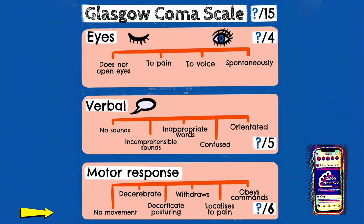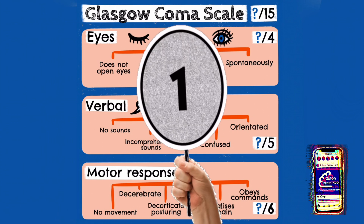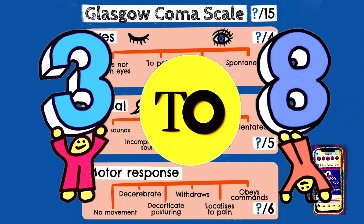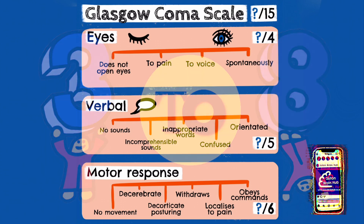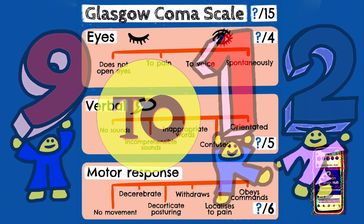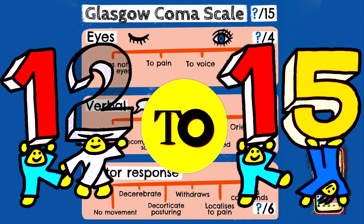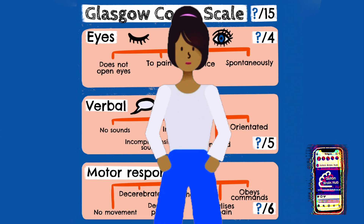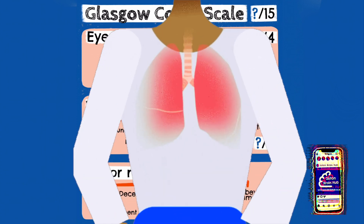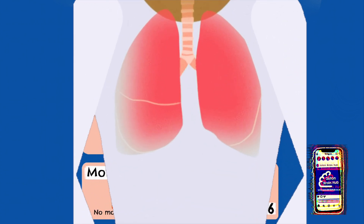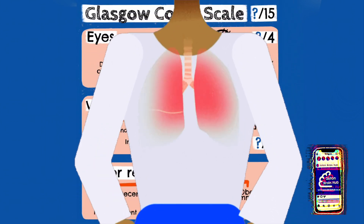No response to a painful stimulus would score 1. When added together, a GCS of 3 to 8 is considered a severe brain injury. 9 to 12 is considered moderate. 12 to 15 is considered mild. A score of less than 8 would be an indication to intubate, due to loss of airway reflexes and risk of aspiration. Scores can be impacted by baseline, sedation, or injury.